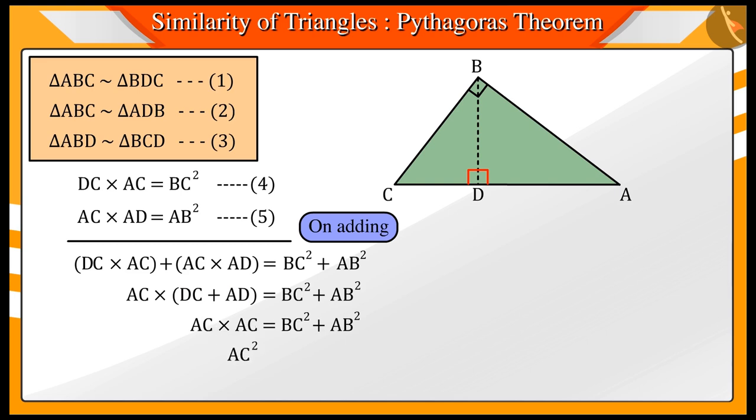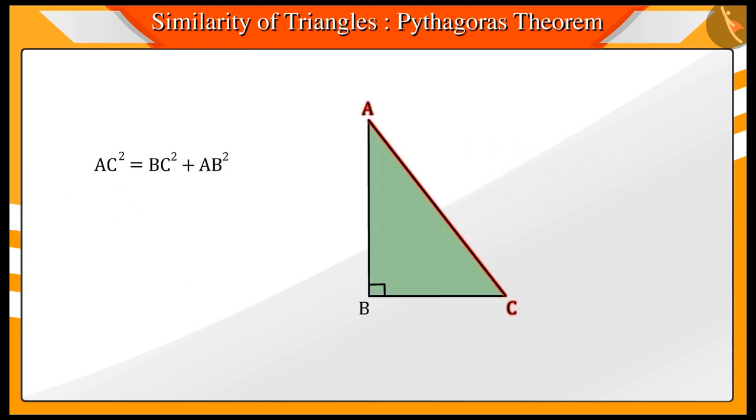On further solving, we get AC square equal to BC square plus AB square, where AC is hypotenuse of triangle ABC and also AB and BC are the remaining two sides of triangle.